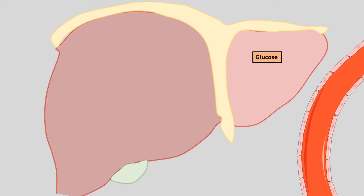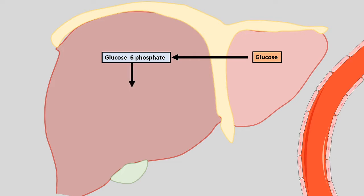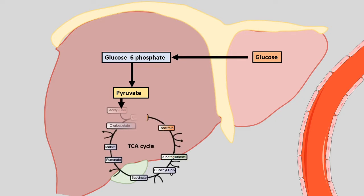Imagine glucose is abundant. Glucose would be channeled into the glycolytic pathway and it would form pyruvate. Along with it, it would produce ATP. Pyruvate would be channeled into the Krebs cycle and oxidative phosphorylation would take place to generate more ATP. In short, when there is plenty of glucose, plenty of ATP would be generated as well.